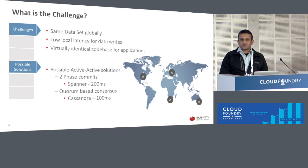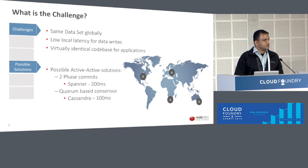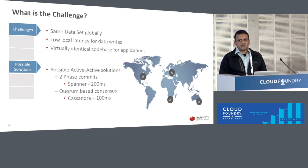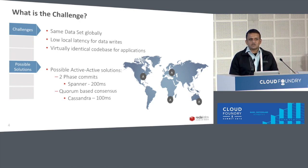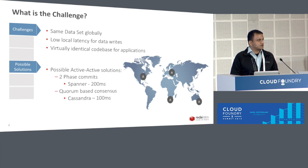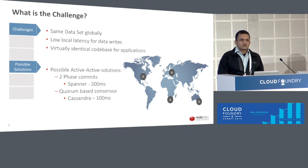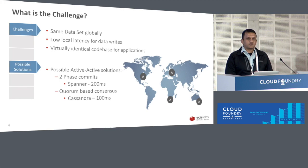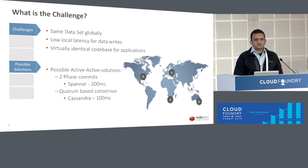Another approach is a quorum-based approach — Cassandra is a good example of how you would do that at global scale. Cassandra is a quorum-based system, so it requires a majority of participating nodes to agree before the commit is written to all Cassandra nodes. With this approach, you are looking at at least over 100 milliseconds of latency. In a typical web app, you want very quick response times. If you're already looking at 200 millisecond latency at your data layer, it will definitely trickle down to your user application and affect the user experience.